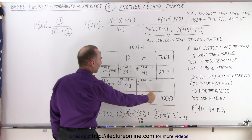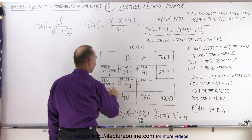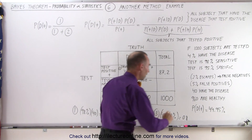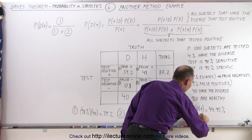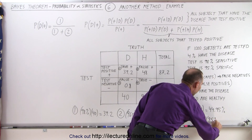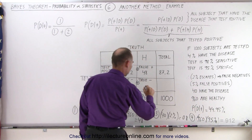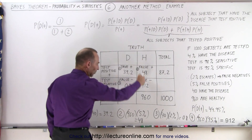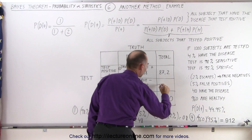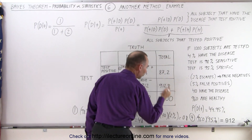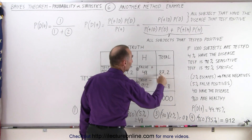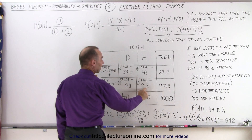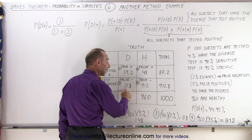Finally, what goes in box number four? We have 960 subjects that are healthy — of those, how many test negative? Since our test is 95% specific, 95% of those who are healthy will test negative. So for box number four we take 960 multiplied by 95%, which equals 912. These boxes represent those who test positive for good reason because they have the disease, and unfortunately false positives who don't have the disease, plus all those who test negative — both the healthy ones and those who have the disease but test negative anyway.